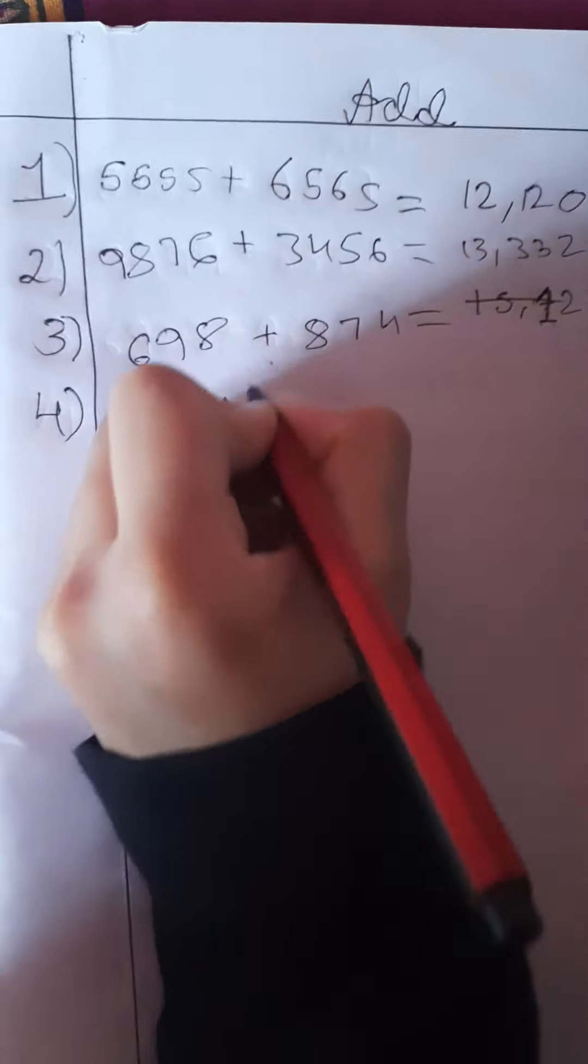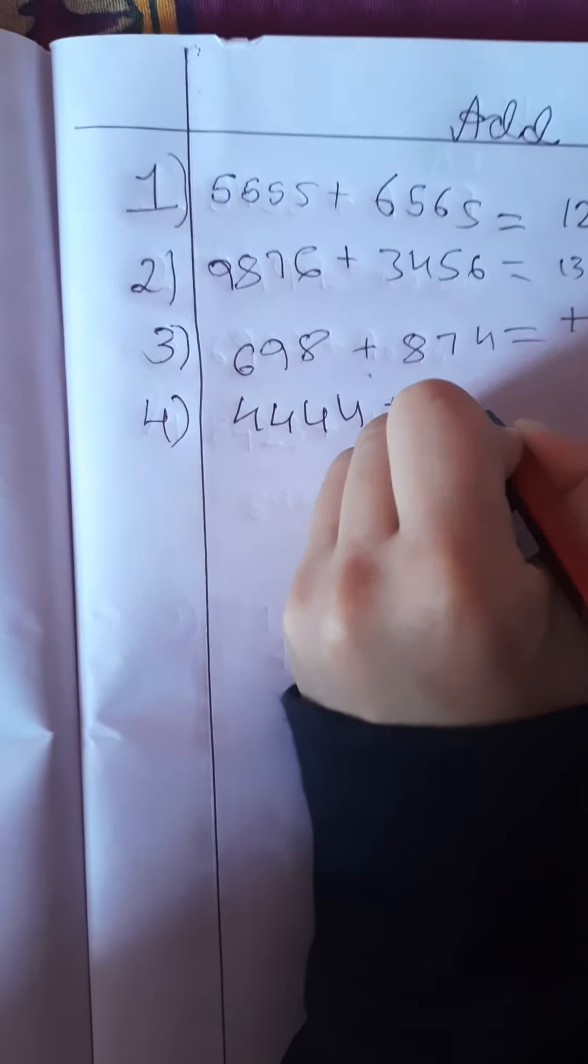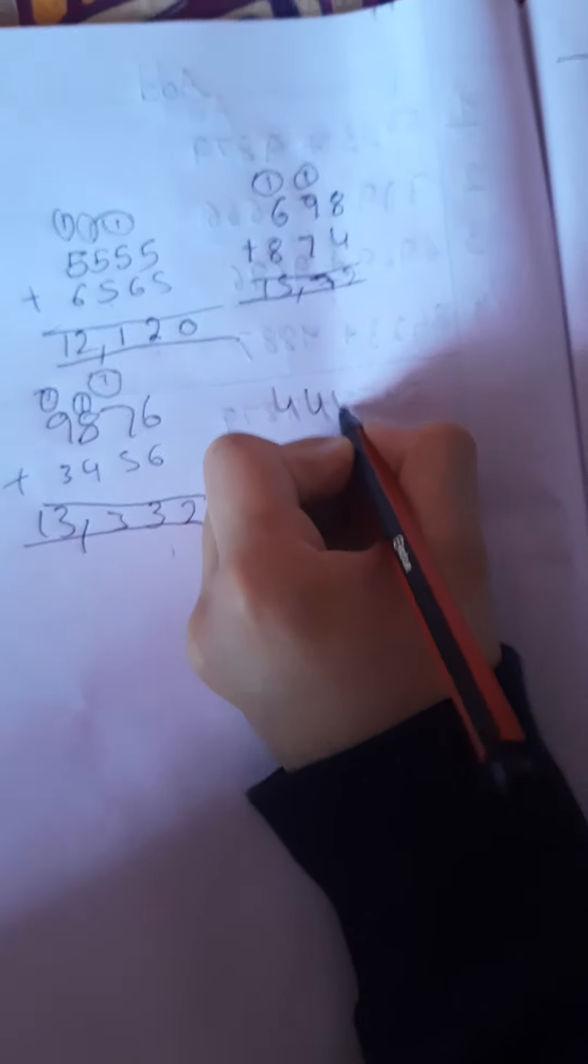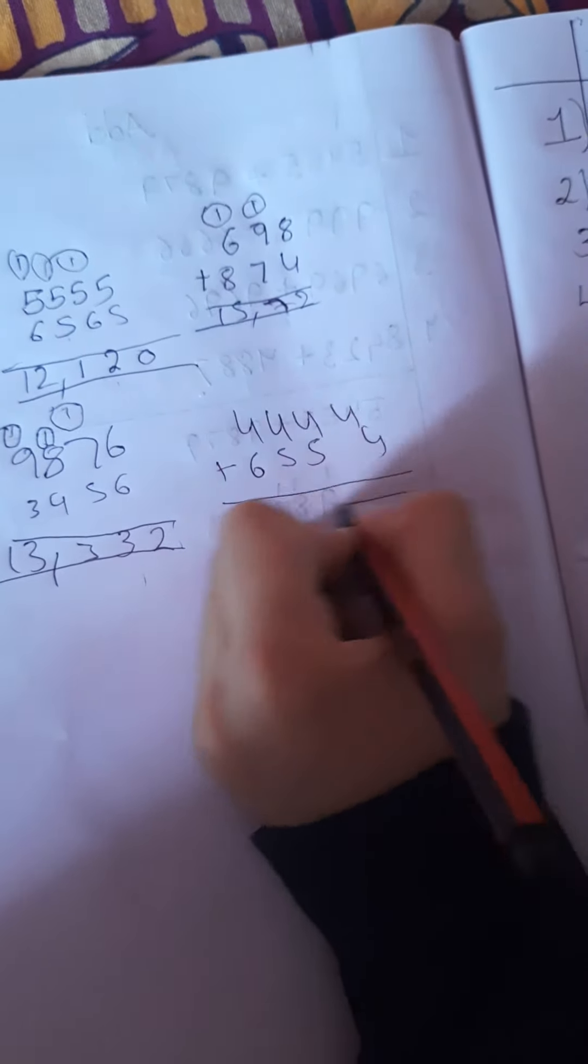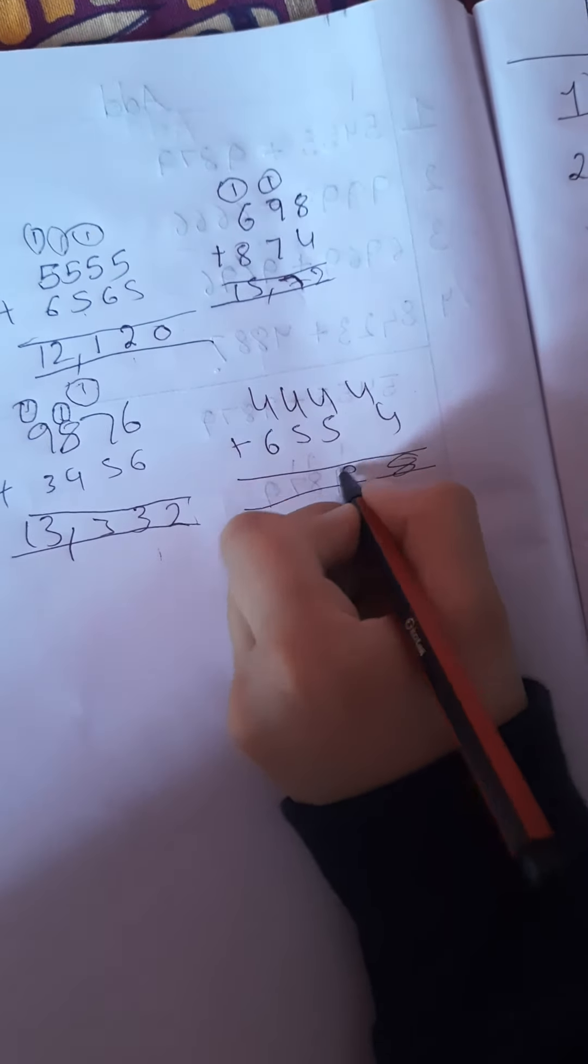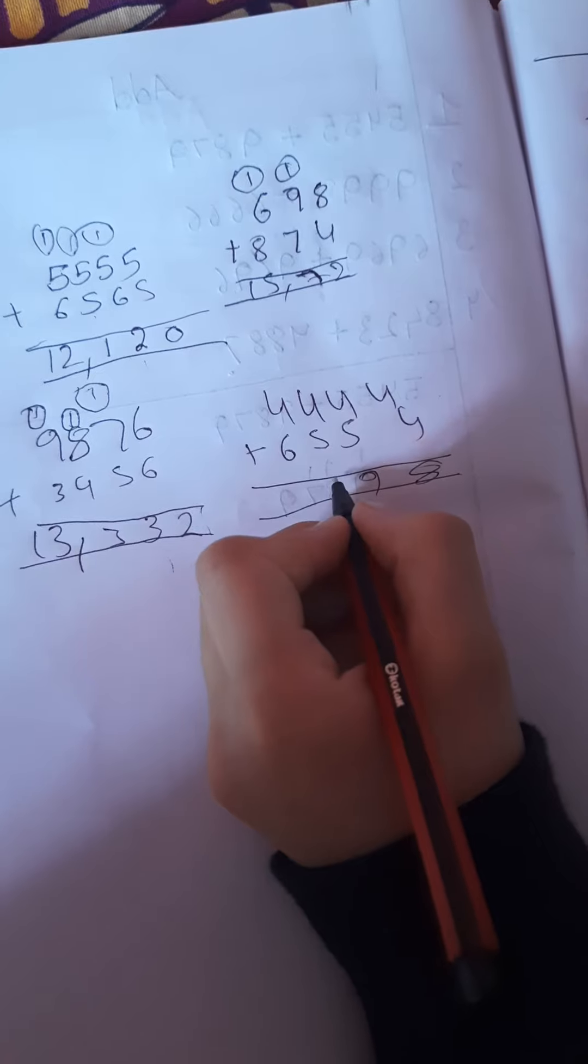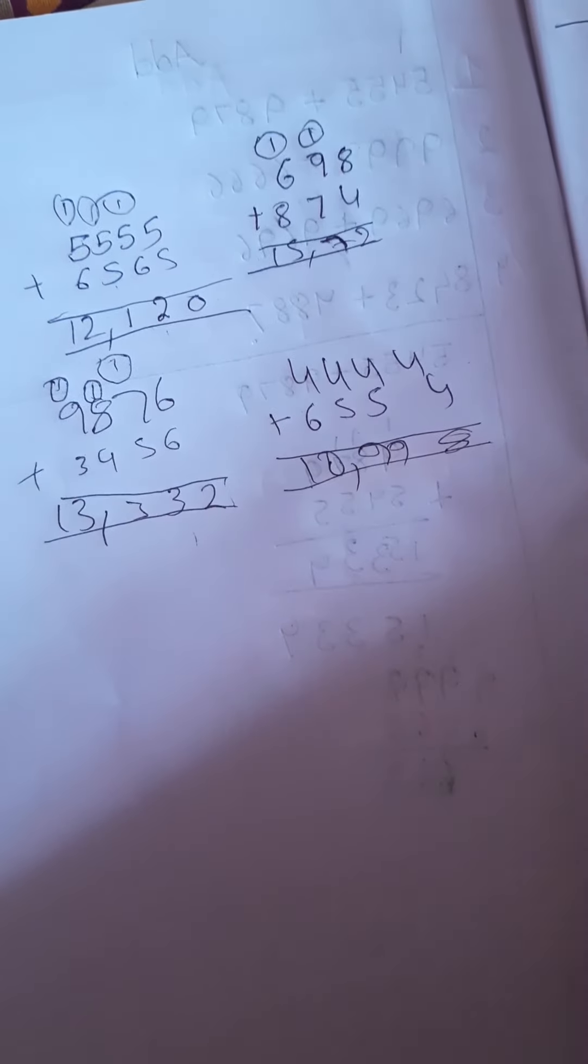Now let's go to the fourth question, 1572. Now we are writing the fourth one. The fourth one is 4444 plus 6554. Now let's go to the borrowing page. 4444 plus 6554. Now 4 plus 4 is 8, 4 plus 5 is 9, 4 plus 5 is 9, and 4 plus 6 is 10. It's 10,998. Let's write here.